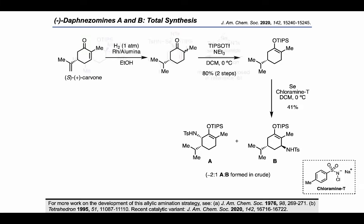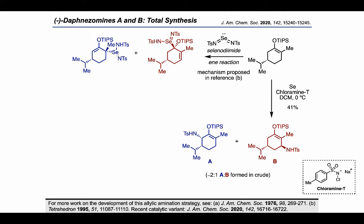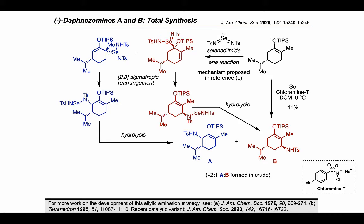This product mixture is presumably formed by the reaction of the enolsilane starting material with a selenodiamide generated under the reaction conditions, which, through an ene reaction, provides this mixture of intermediates. A subsequent [2,3]-sigmatropic rearrangement on each of these intermediates can lead to carbon-nitrogen bond formation, which, after a hydrolysis step, leads to the product shown. It's worth pointing out that there has been some recent work on a catalytic version of this allylic amination by the group of Forrest Michael.